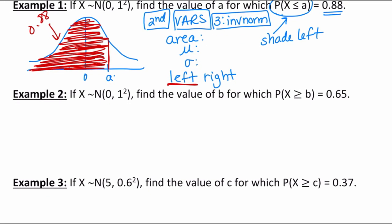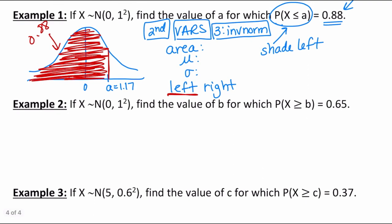So the value of a is 1.17. Because this is the standard normal distribution with mean 0 and standard deviation 1, we can verify: to the left of the mean is already 50%, and within one standard deviation the empirical rule gives half of 68%, which is 0.34. Adding 0.5 and 0.34 gives 0.84 — very close to the correct answer of 0.88 at 1.17.